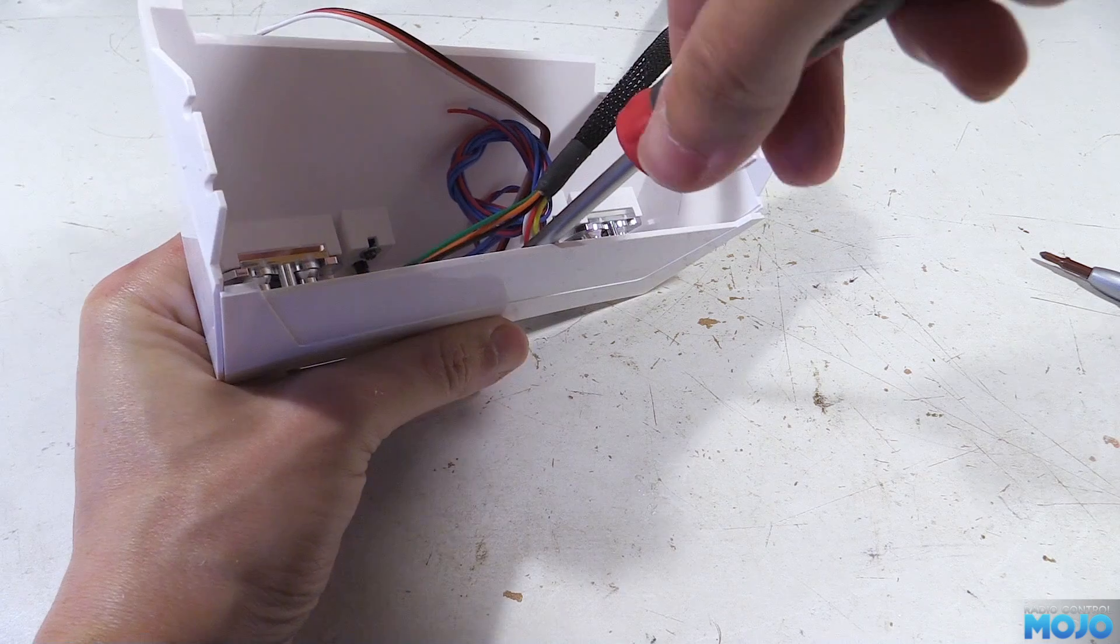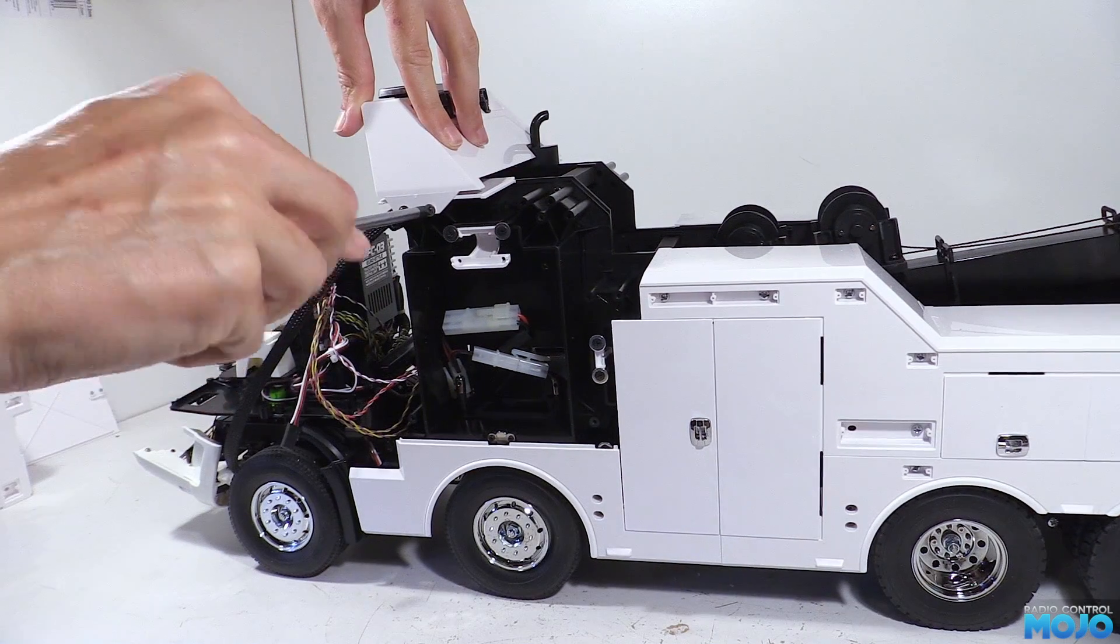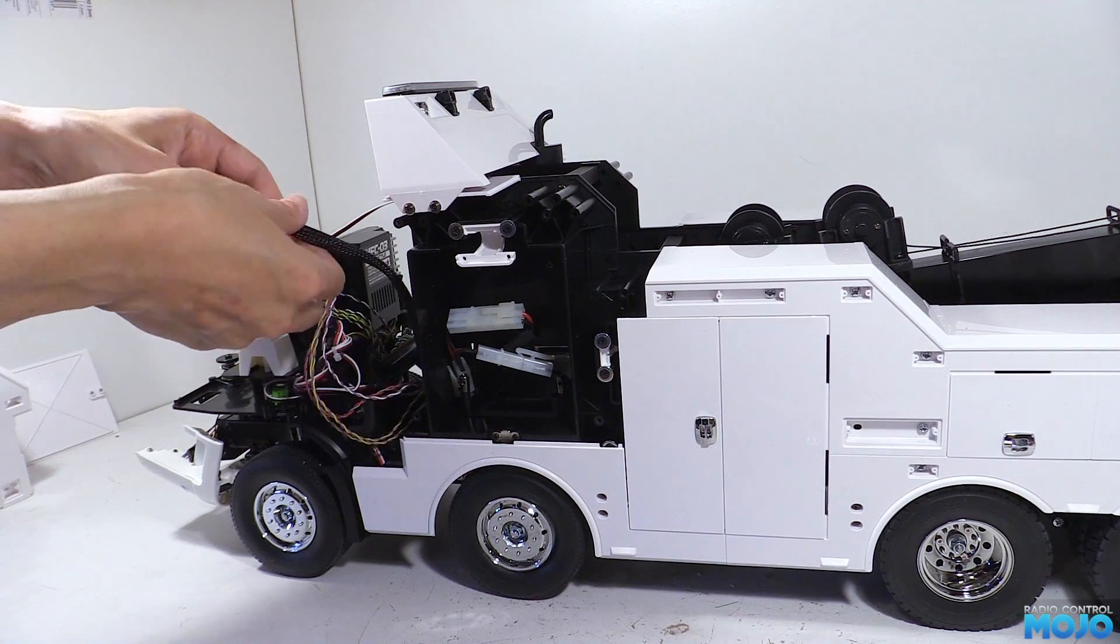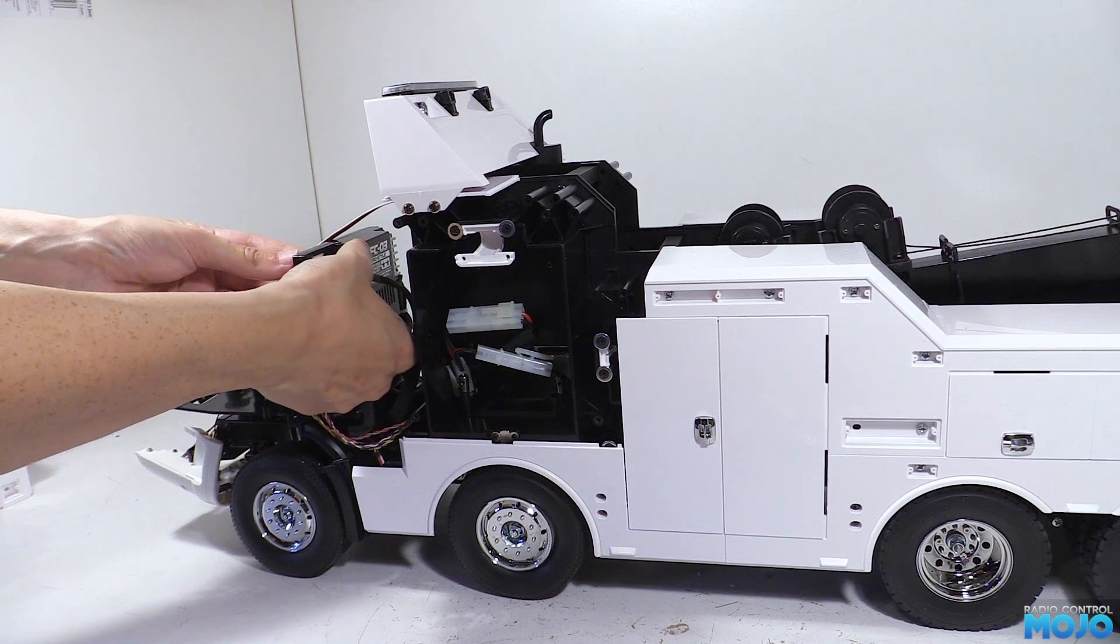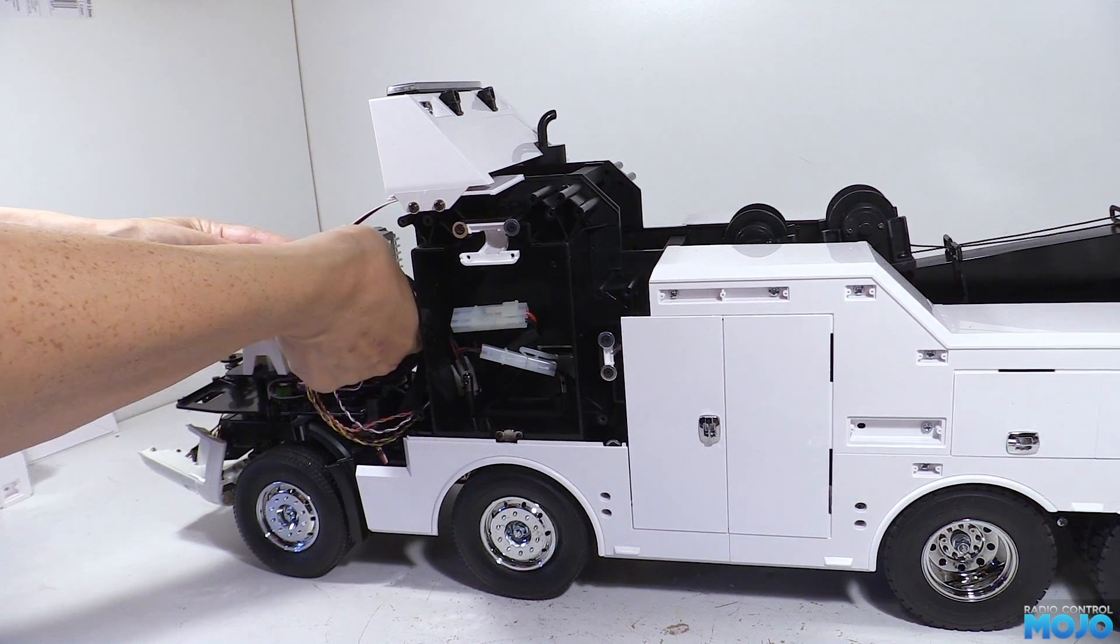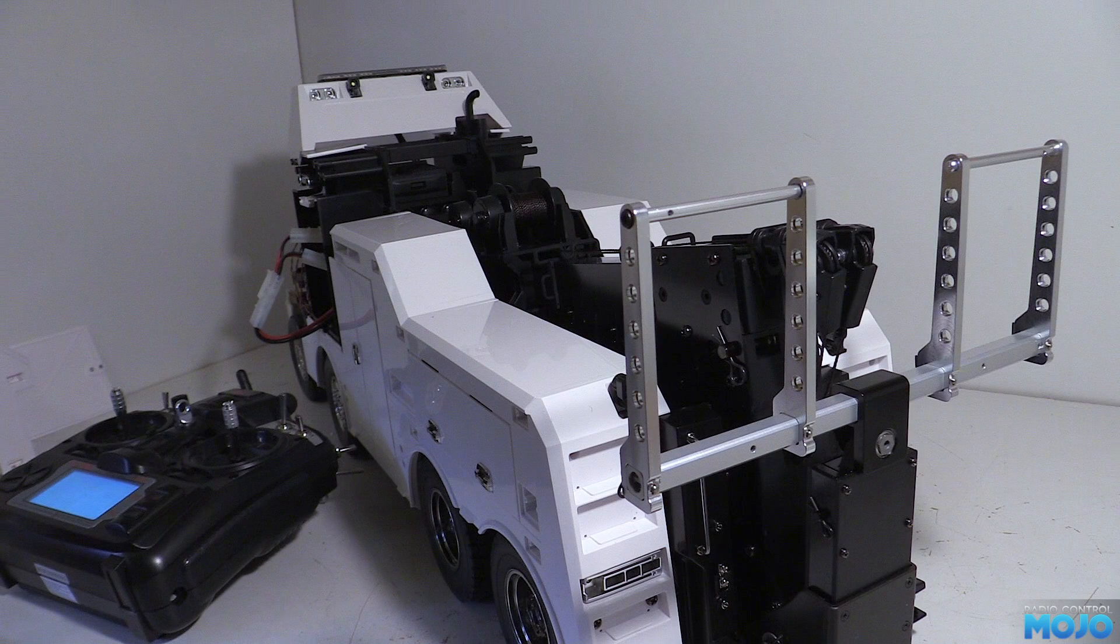Now before we put things back together we're going to need to tidy up the work light wires, just wrapping them up so they can tuck up out of the way. Then we reattach the front plate and nip up the three screws, offer the box up to the top of the chassis and nip up its screws, connect the beacon to a spare channel on the receiver and connect up the tail lights to the trailer connector.